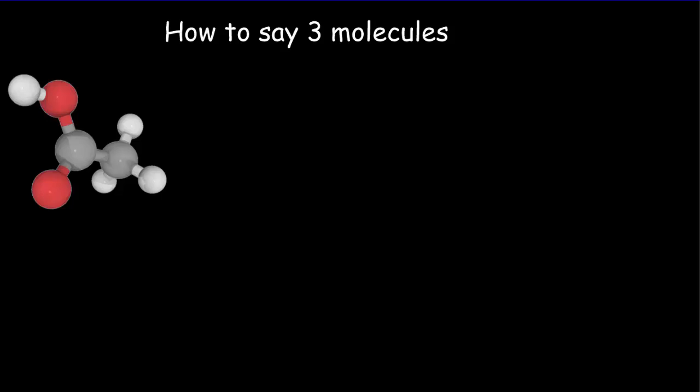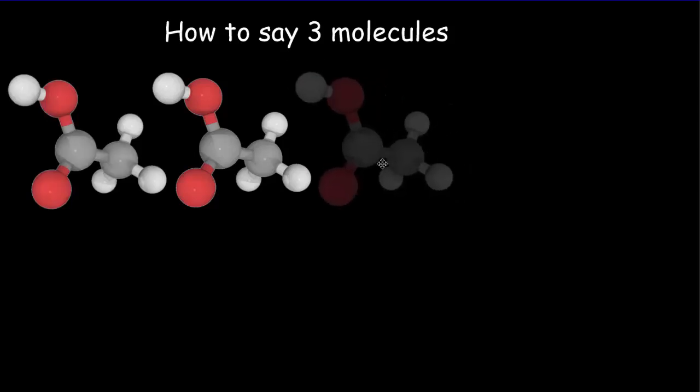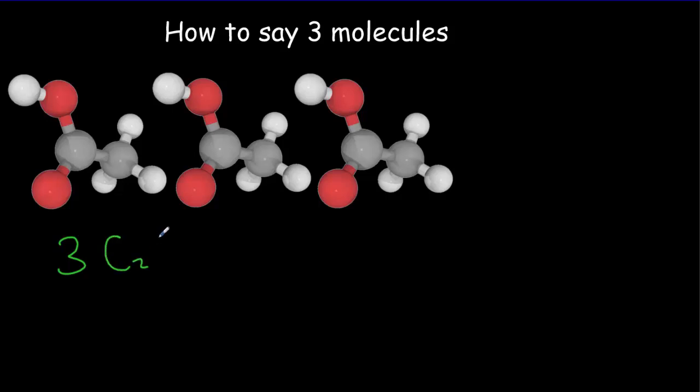When you begin to balance chemical equations, you'll often want to be able to say, oh, there's three molecules of this, or there's two molecules of that. So let's say we've got three molecules of acetic acid. There's the second. There's the third. The way we say that is with a coefficient. So we'll write a three in front of the chemical formula. That three we call the coefficient, and it tells how many molecules we're talking about.